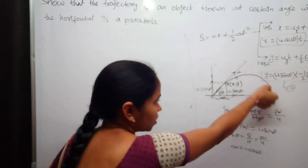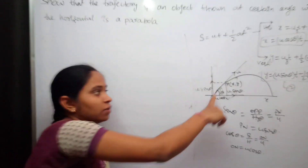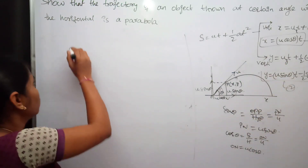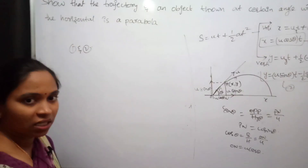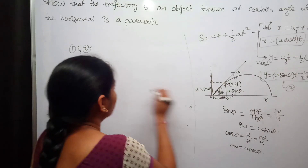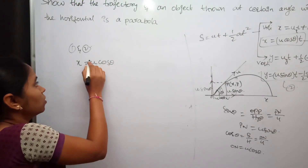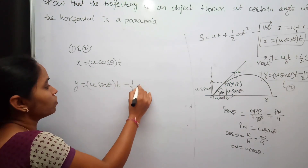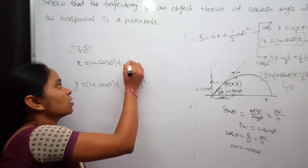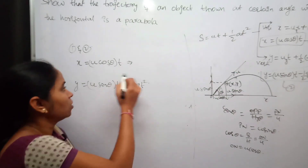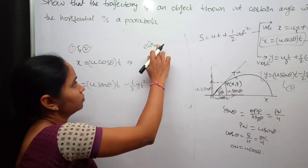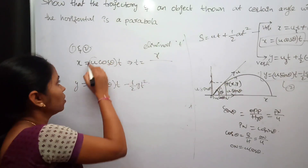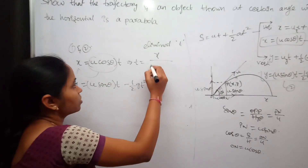We have to find out the path of this projectile motion. The path is nothing but the trajectory. Using equations one and two we are going to find out the trajectory. Equation one is x = u cosθ · t, and equation two is y = u sinθ · t − ½gt². To eliminate t, from equation one: t = x / (u cosθ).